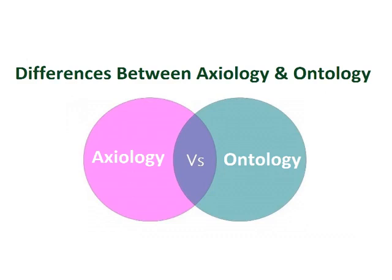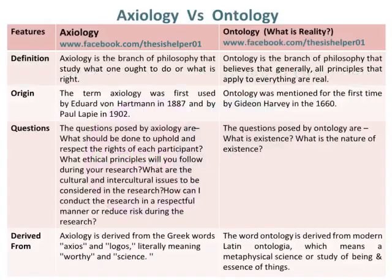Differences between axiology and ontology. Axiology is the branch of philosophy that studies what one ought to do or what is right. Whereas, ontology is the branch of philosophy that believes that generally, all principles that apply to everything are real. The term axiology was first used by Edouard von Hartmann in 1887 and by Paul Lappey in 1902, whereas ontology was mentioned for the first time by Gideon Harvey in 1660.